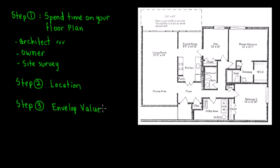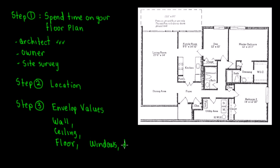The envelope values cover wall, ceiling, floor, windows, and doors. What we need specifically are the U-values — the U-factor. There's another video covering U-factor and insulation values. You also need the Solar Heat Gain Coefficient. The reason location comes first is because you need to know the International Energy Conservation Code (IECC) requirements for that location.